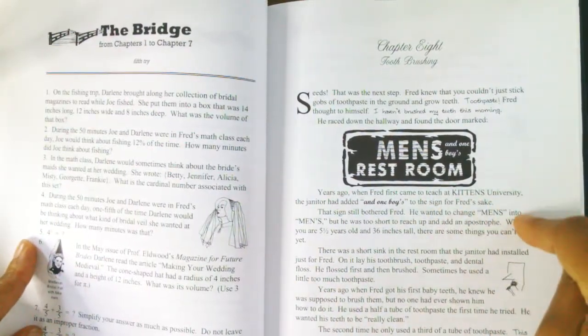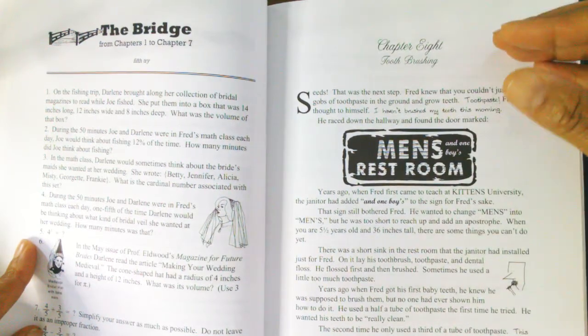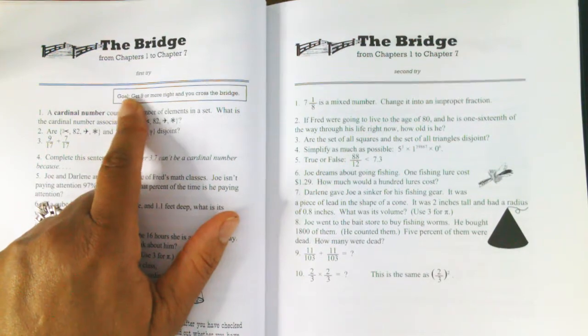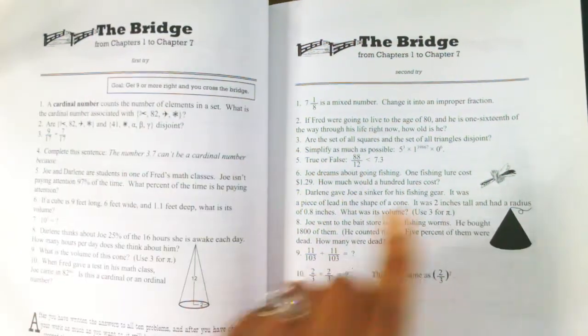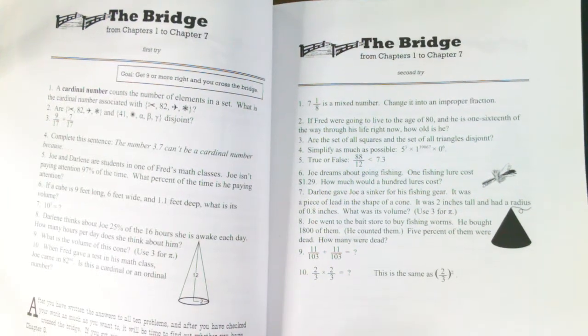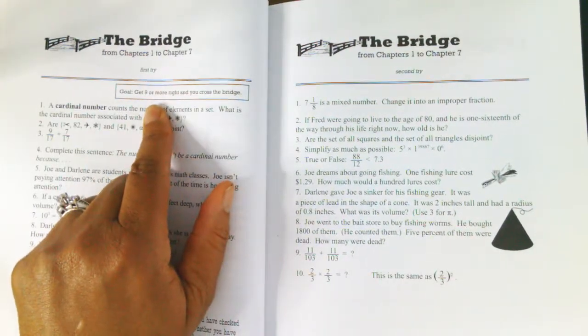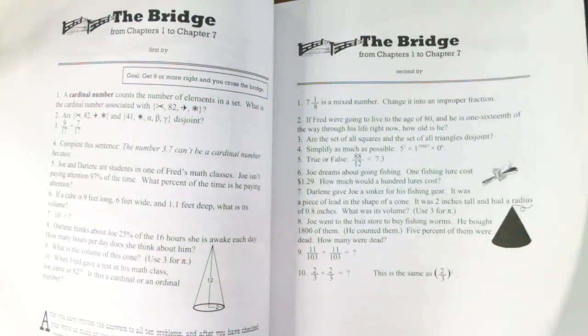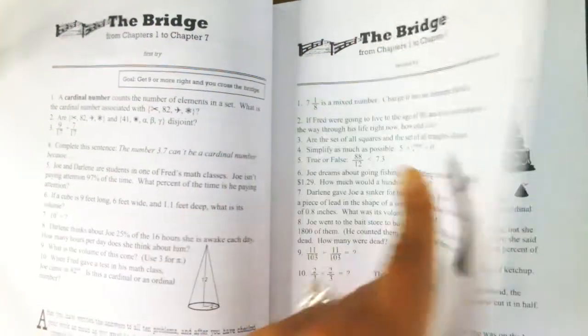If they don't, if they miss the goal of getting nine or more right, then they go on to the second try, and it still holds true to get nine or more right. If that wasn't successful, you get the third try. If that's not successful, the fourth. If that's not successful, the fifth.